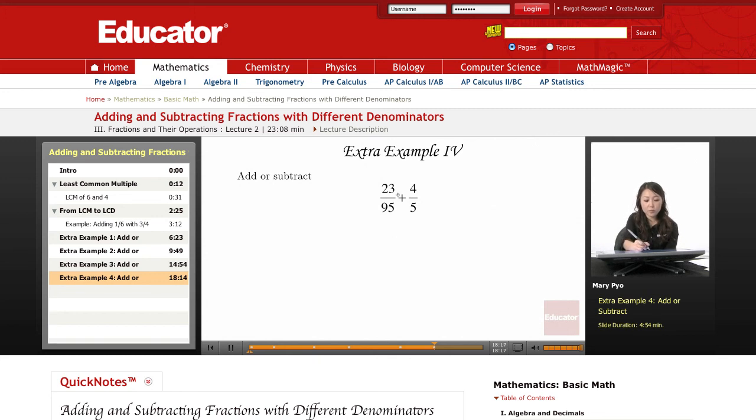This example: 23 over 95 plus 4 over 5. In order for me to add these two fractions, I have to make sure they have a common denominator. In this case they don't—95 is this denominator and 5 is the other one.